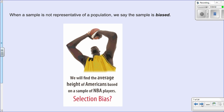We need to make sure our survey isn't biased. A biased survey is not representative of the full population. For example, if we wanted to know the average height of Americans but based it only on the heights of NBA players, the number would be much higher than average. We would not be collecting a representative sample — it would be a biased sample and our results would not be valid.